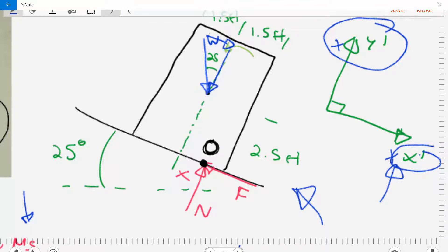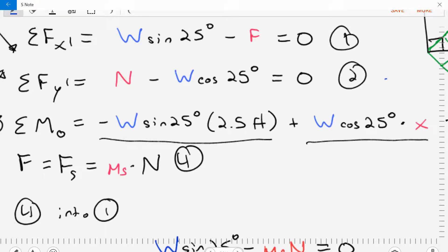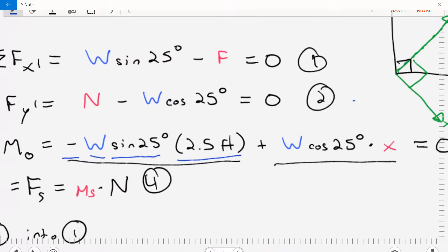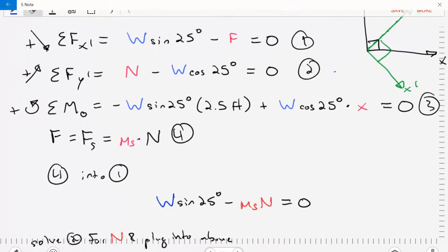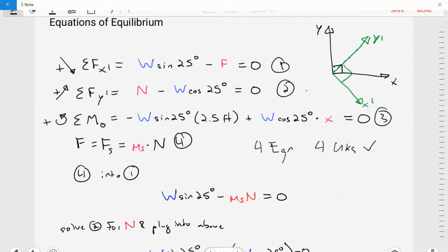So now we've got these two forces kind of broken down. We know their moment arms. We can figure out their sense of rotation. Putting all that together, we get our moment equation where we have negative W times sine of 25 degrees times 2.5 feet, plus W times cosine of 25 degrees times our X term, our X unknown. So now we've got our three equations of equilibrium. And then we can add that extra equation for impending motion, that the force F is equal to mu S times N. We look at these equations, we see that we have four equations and four unknowns. So we're in a state where we can solve this problem. We can work through these equations and solve for the unknowns.